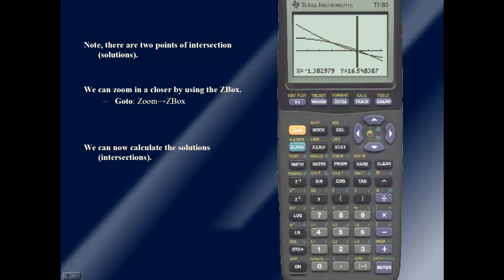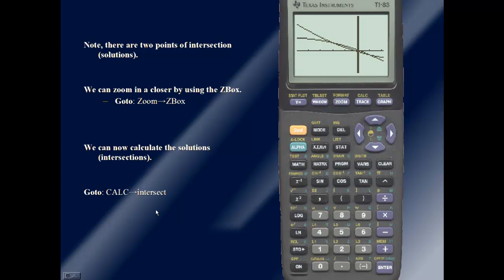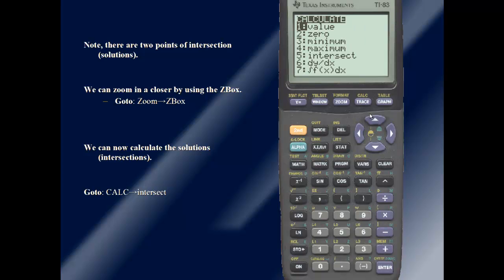We can now calculate the solutions. Next we'll use the intersect function to calculate the intersection. So I'll press second and trace which is the calculate function. I'll scroll down to intersect. It places the cursor on the first curve, and it's near a point of intersection. So I'll move it a little bit closer toward that intersection point and I'll press enter.